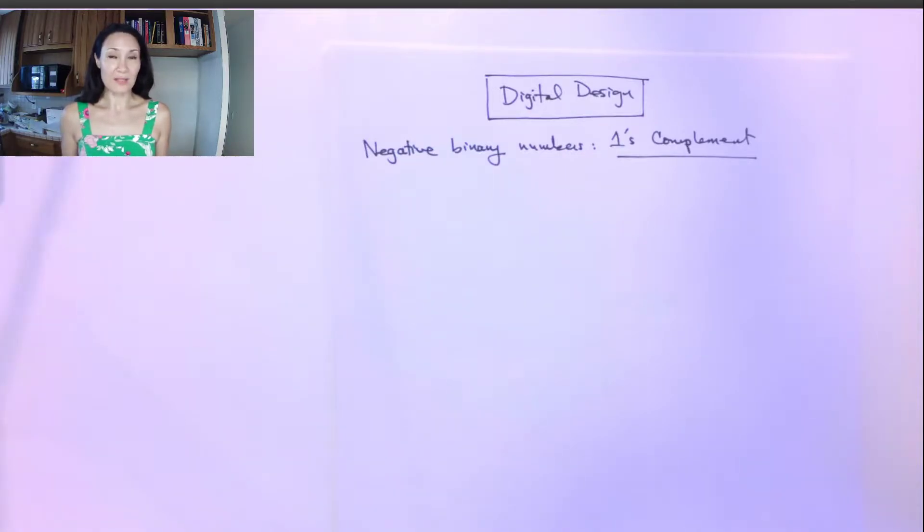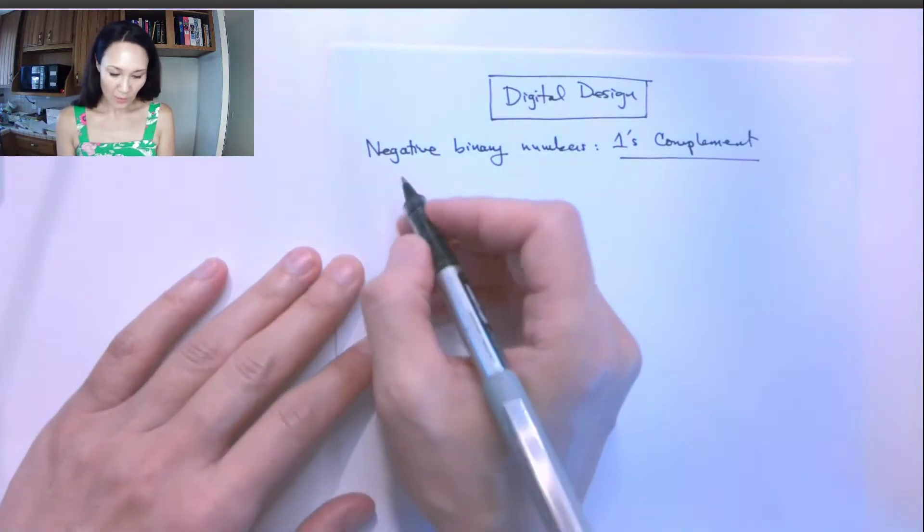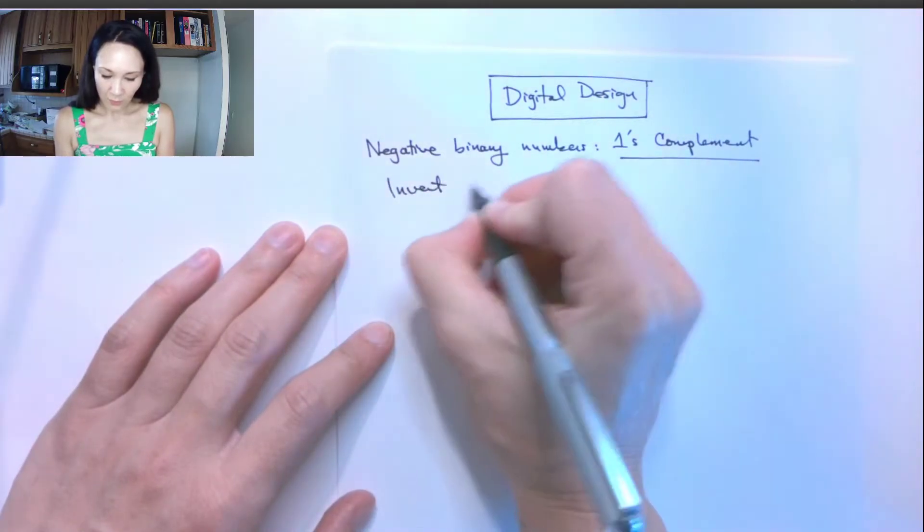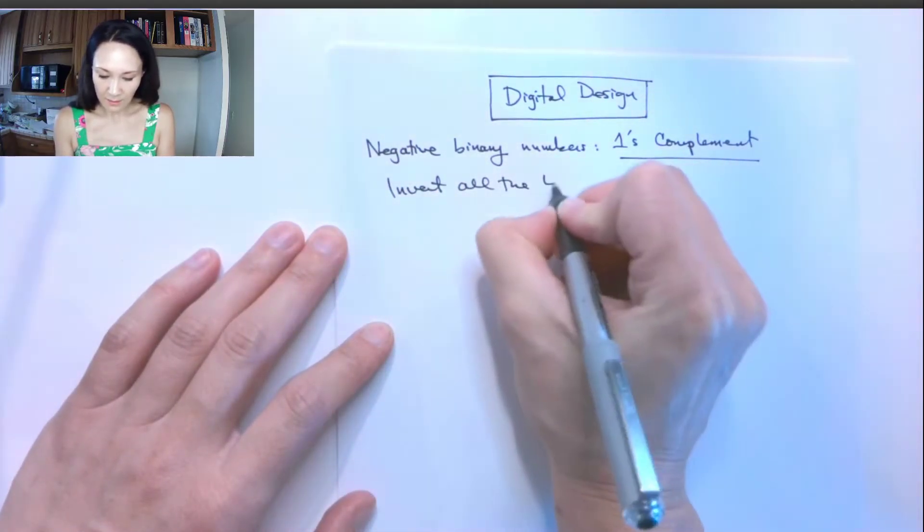So if the input is a zero, we change it to a one. If the input is a one, we change it to a zero. So let me show you an example. We just invert all the bits.